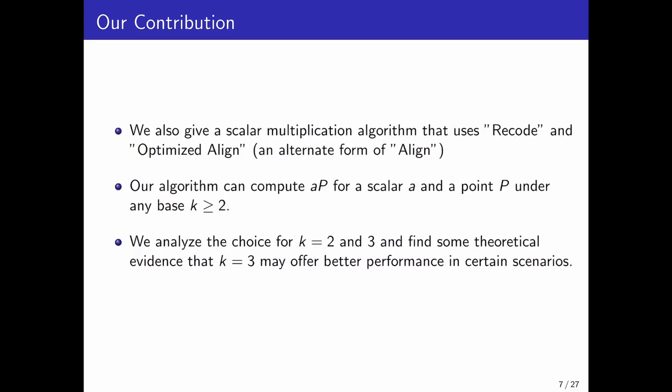Our recoding and sign alignment algorithms are regular in nature. We also give a scalar multiplication algorithm that uses both Recode and Align, rather optimized Align, which is an alternate regular form of Align. This algorithm computes a times P for any positive integer base greater than 1. We also compare base k equals 2 and k equals 3 case for our scalar multiplication algorithm, and according to our analysis, we obtain some theoretical evidence where k equals 3 may outperform k equals 2 in certain scenarios.